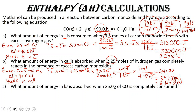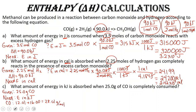The last problem asks: what amount of energy in kilojoules is absorbed when 25.0 grams of carbon monoxide is completely consumed? We're given 25.0 grams of CO and need energy in kilojoules. We're missing one piece — our reaction uses moles, but we're given grams — so we first need the molar mass of CO: 12.01 + 16.00 = 28.01 grams per mole.